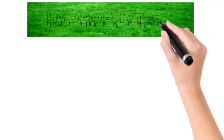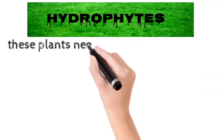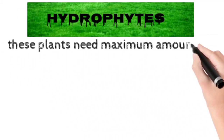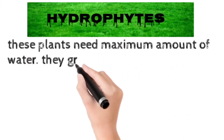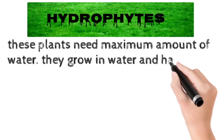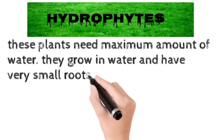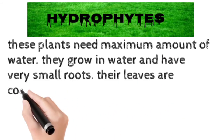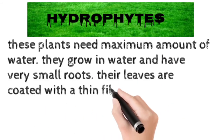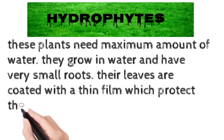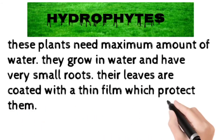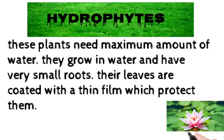Number 3: Hydrophytes. These plants need the maximum amount of water. They grow in water and have very small roots. Their leaves are coated with a thin film which protects them. Lotus is their example.